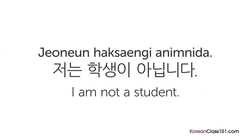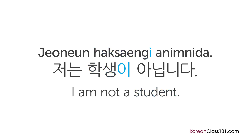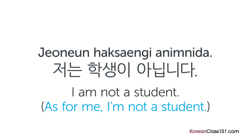An important thing to remember is that Korean often contains double subjects, with one being marked by the topic marker and the other marked by the subject marker. For example, 저는 학생이 아닙니다, meaning 'I'm not a student,' has two subjects: 저, meaning 'I,' and 학생, meaning 'student.' The topic of the sentence is 저, so it uses 는, the topic marking particle. 학생, meaning 'student,' is the subject, so it uses the subject marking particle 이. This can be translated as 'as for me, I'm not a student.'